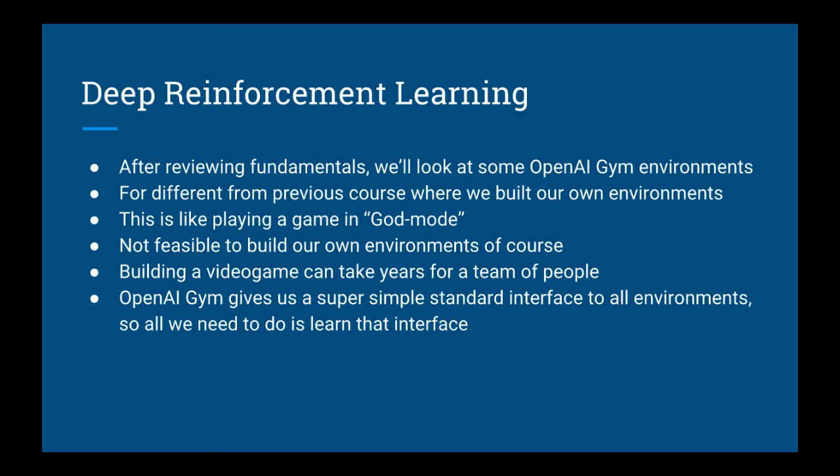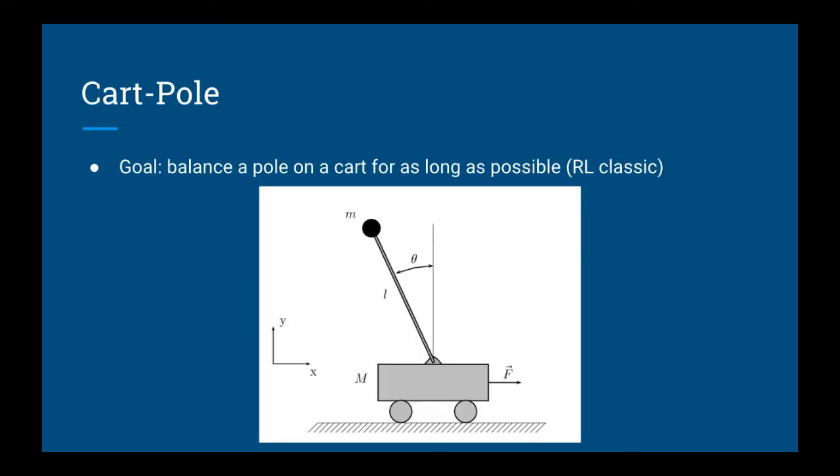OpenAI Gym gives us a super simple standard interface to all of its environments, so there's not much thinking we have to do beyond understanding how to interface with it. In this course, we'll be training an agent in the cart pole task, also known as the inverted pendulum. This is a reinforcement learning classic — the goal is to balance a pole on top of a cart for as long as possible.